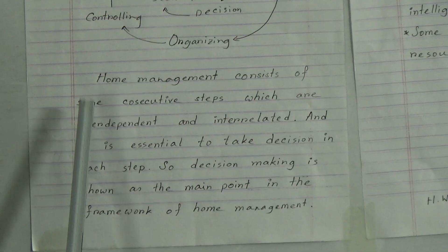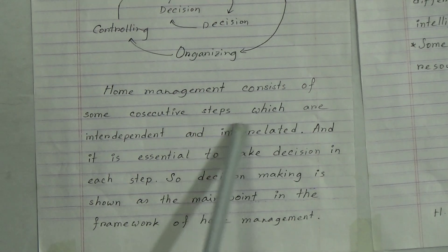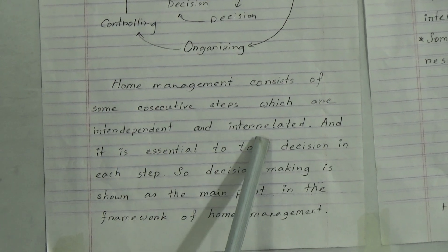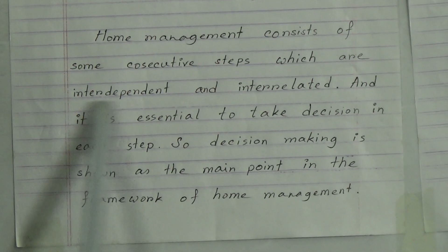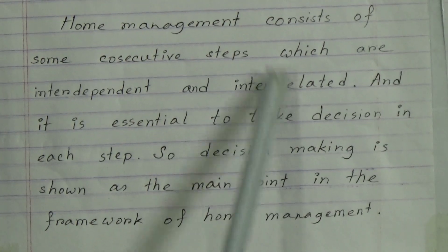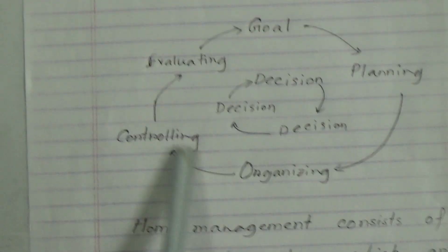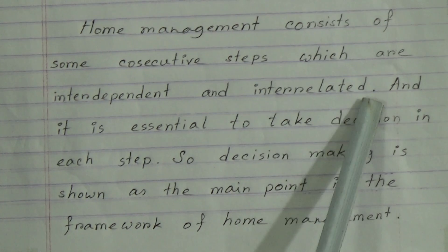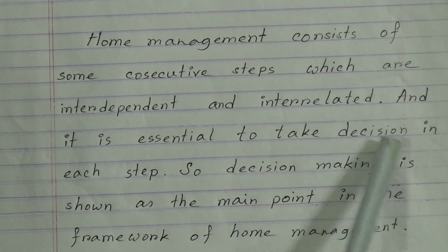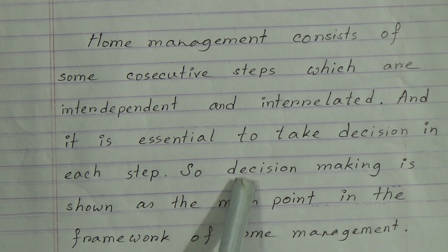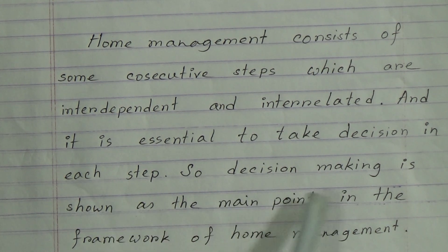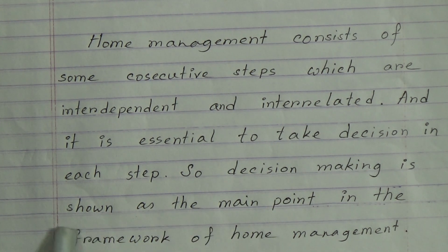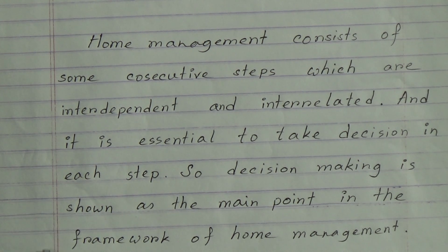After we reach a proper goal, we can take a final decision about managing the home. Home management consists of consecutive steps which are interdependent and interrelated, forming a circular structure. Decision-making is shown as the main point in the framework of home management. That was the main summary of lesson 1 — the steps of home management and how they work in reaching decisions.